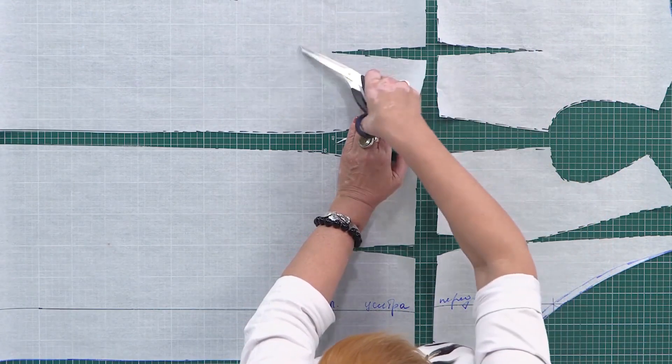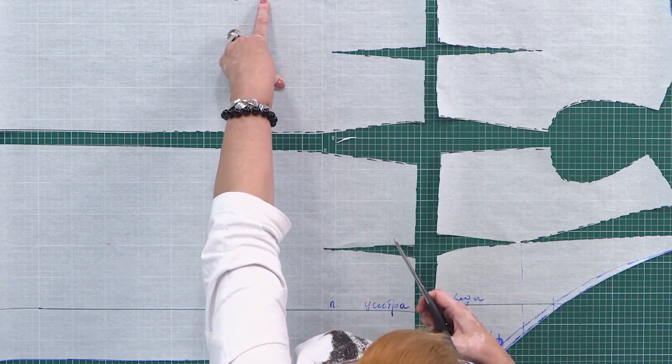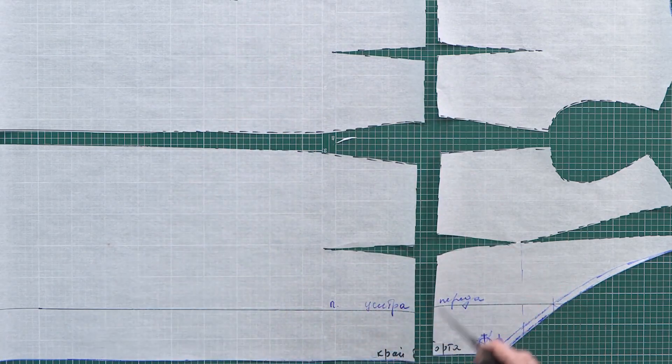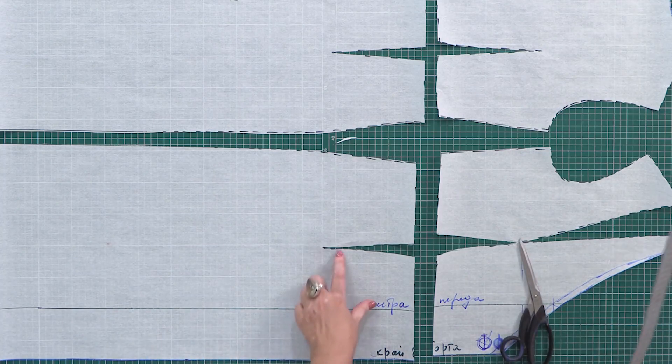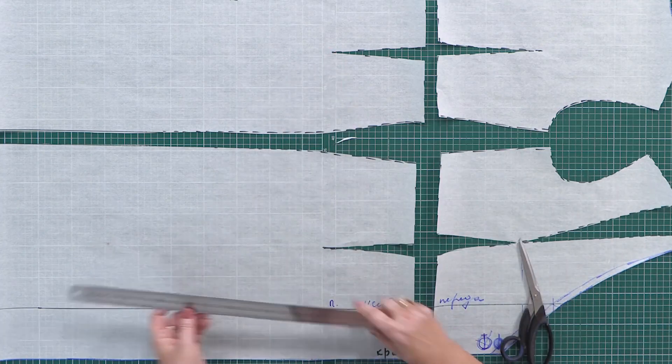This is the upper part of the back and this is the lower part of the back. Do not forget to sign them. What should we do next? I need to draw the lines down from the dart tops.